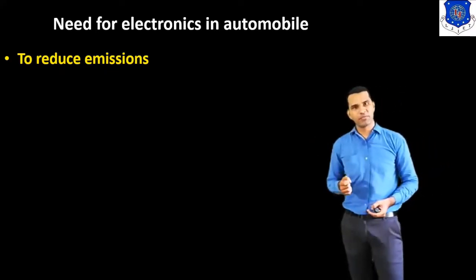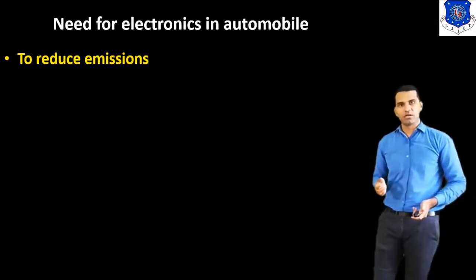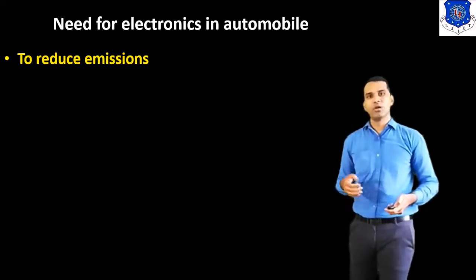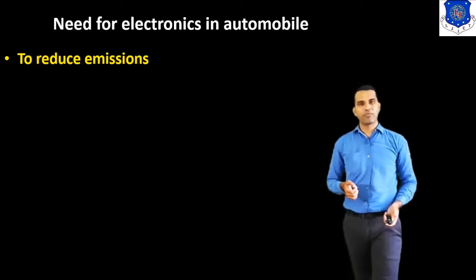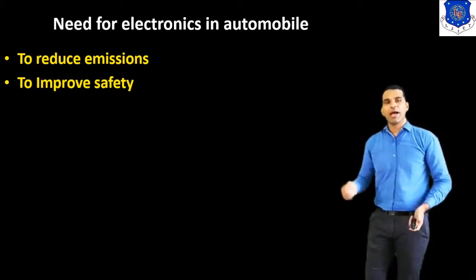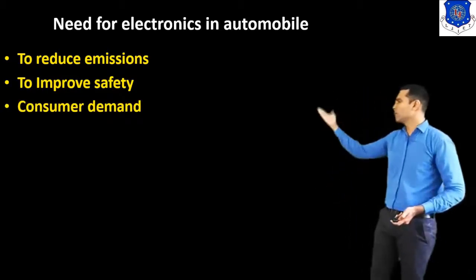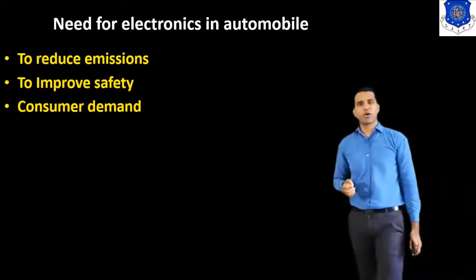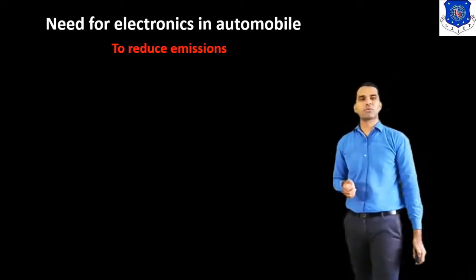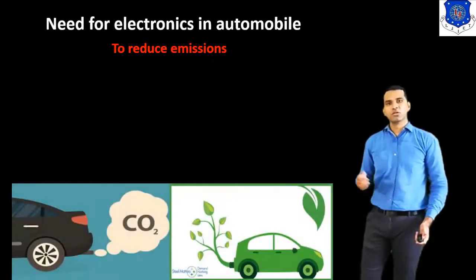Mainly, there are three reasons behind this. The first reason is to reduce emissions — that means carbon dioxide emission, or NOx emission — to reduce the emission from the car. The second reason is to improve safety. And the third reason is consumer demand. Because of these three reasons, we need electronics in the automobile. We start with the first one: to reduce the emission.